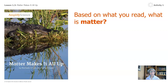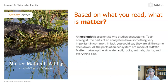Based on what you read, what is matter? You may want to pause the video and look at the book again or look at your packet. This is what the book said: an ecologist is a scientist who studies ecosystems. To an ecologist, the parts of an ecosystem have something very important in common — you could say they are all the same deep down. All the parts of an ecosystem are made of matter. Matter makes up the air, water, soil, rocks, animals, plants, and everything else. So what is matter? It seems like it's a lot of things — like everything: water, rocks, plants, living things.